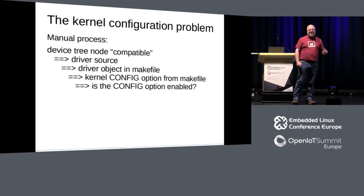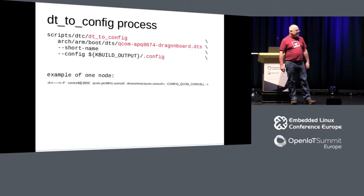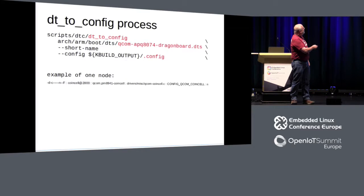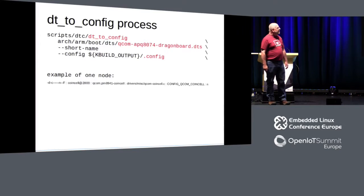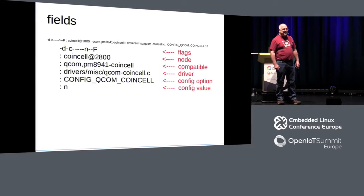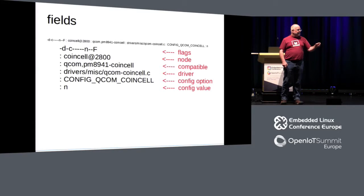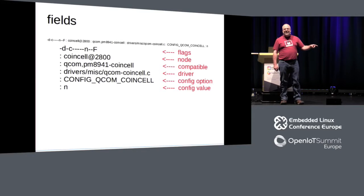It's not complicated, but it's a long process — especially if you have several hundred nodes. The solution is the new tool DT2Config. You just pass it the device tree you want and optionally the kernel config file, and out pops a line for each device. You'll see all the things from the manual process: the device node, the compatible string, which driver matches, which config option needs to be enabled, and whether that config option is actually enabled.